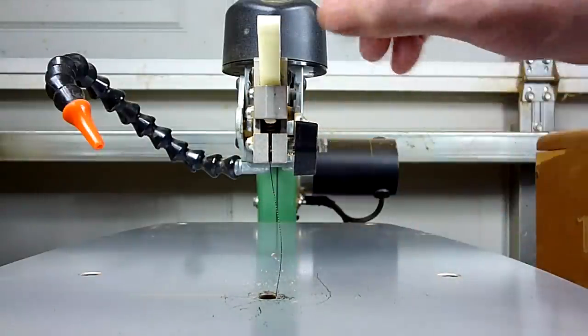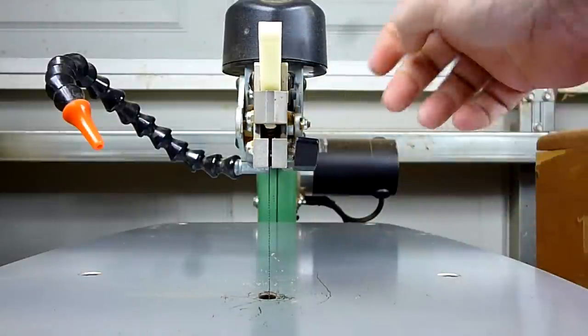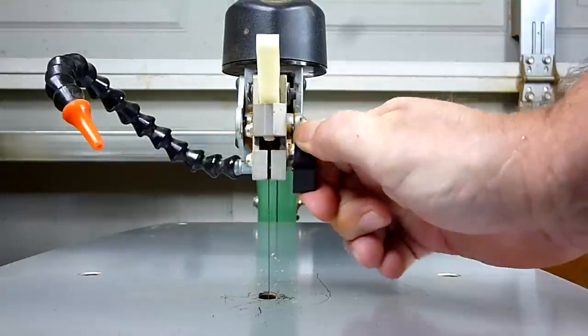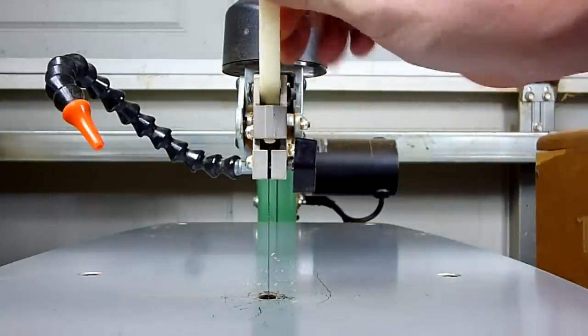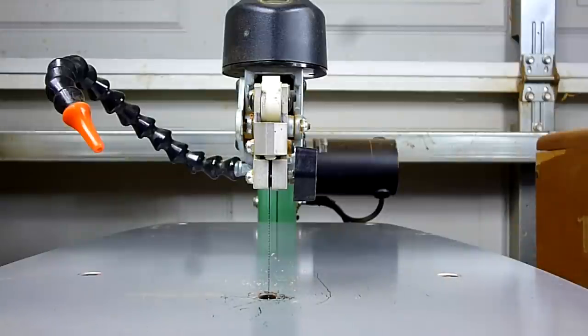So all we do is simply just loosen the top knob up, let the blade find its own spot, tighten it back down. And now we got a real nice tension on it and it should not stretch anymore. But I do like to periodically check it as I'm cutting because it's really simple and easy to do.